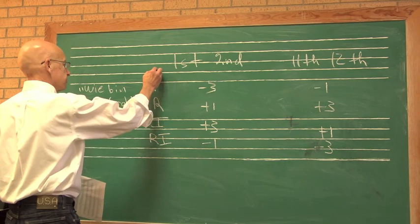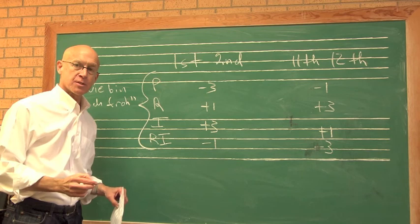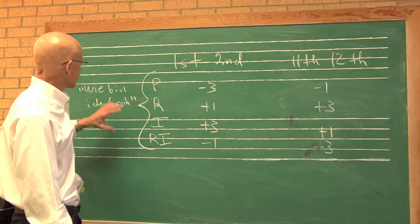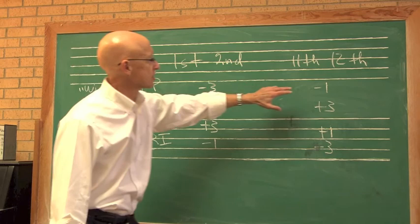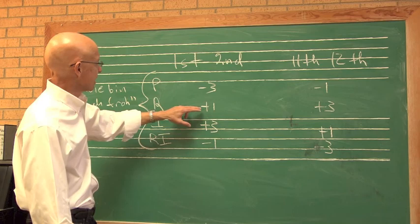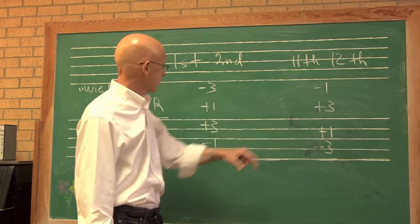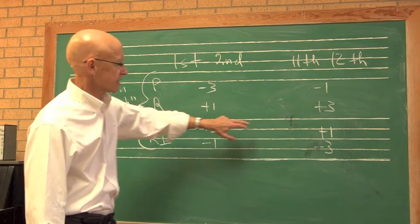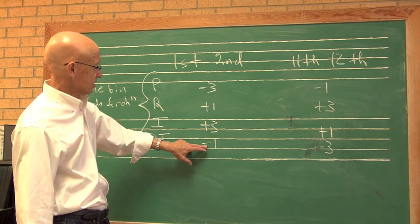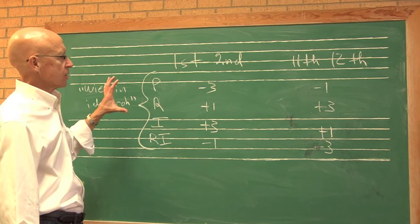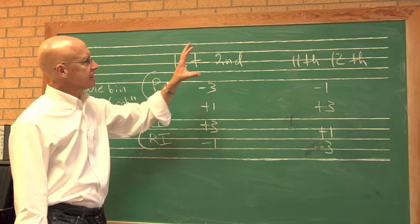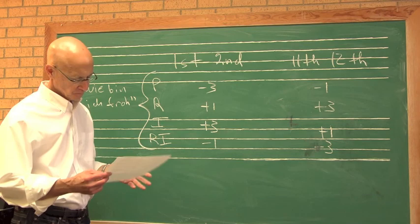Or this reversed for a retrograde inversion. So this will become much clearer in use. I'm sure it seems rather abstract now. But the purpose of this is to show you that when you're looking for permutations of the row, in Wie bin ich froh, if a row starts with a descending minor third and ends with a descending half step, you might very well have prime. If a permutation starts with an ascending minor second and ends with an ascending minor third, you probably have retrograde. If a permutation begins with an ascending minor third and ends with an ascending half step, you probably have the inversion. So this is a way to keep track of characteristic intervals at the beginnings and ends of each of the four permutations in a 12-tone row.